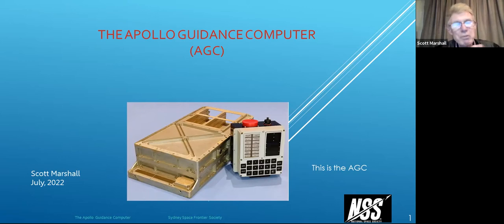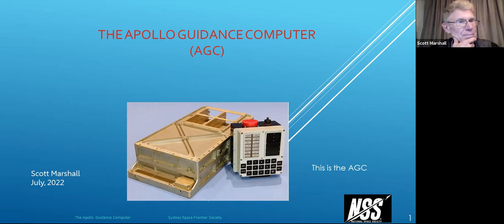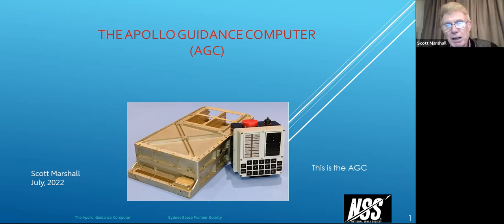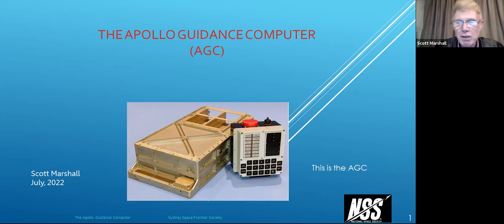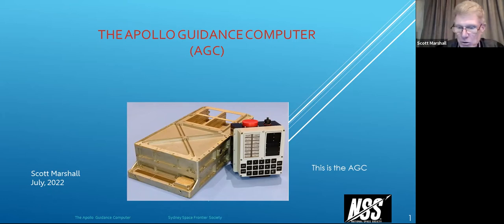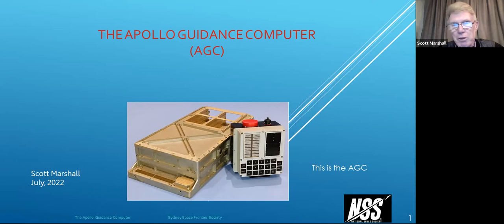I'm going to read off a script here, so my apologies if I turn away from the camera from time to time. The talk today is about the Apollo Guidance Computer. The picture shows, on the left-hand side, the actual Apollo Guidance Computer, and on the right-hand side a little device called the DSKY — the interface that the astronauts used to talk to the Apollo Guidance Computer.